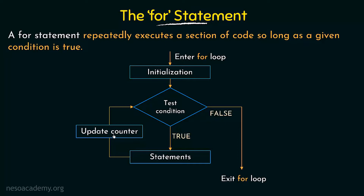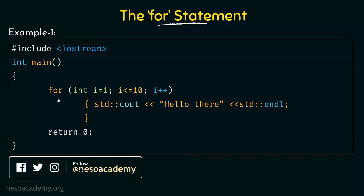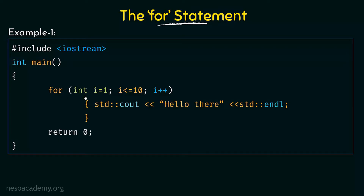Now let's take an example to see the syntax and its working. In this first example, we have a program with our header and then the main function. Inside the main function, we are writing the for statement. We write 'for' and within parentheses we write these three important things. First is the initialization — I am initializing and declaring a variable called i equal to 1. I am also declaring it inside the for loop itself, which is possible in C++.